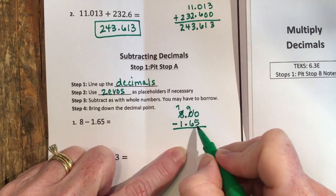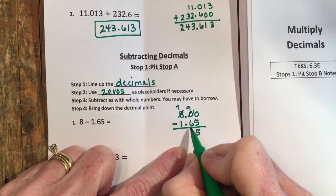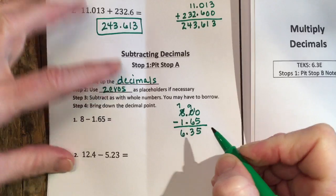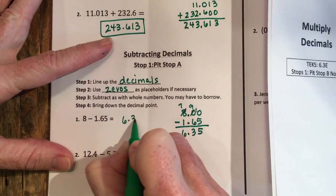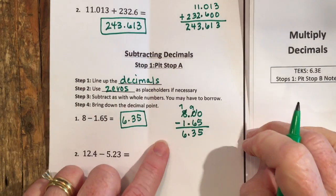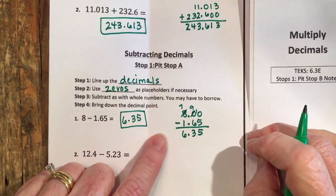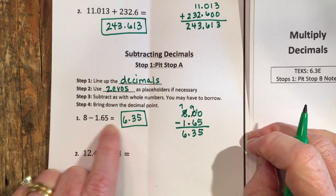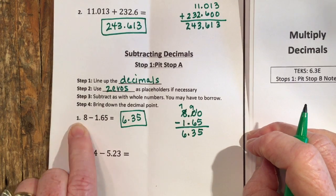So 10 minus 5 is 5, 9 minus 6 is 3, 7 minus 1 is 6, and I drop down my decimal. My answer is 6.35. And if you're ever unsure about your answer, remember you can work backwards to see if you're correct. I could add 6.35 plus 1.65 and see if I end up with 8.